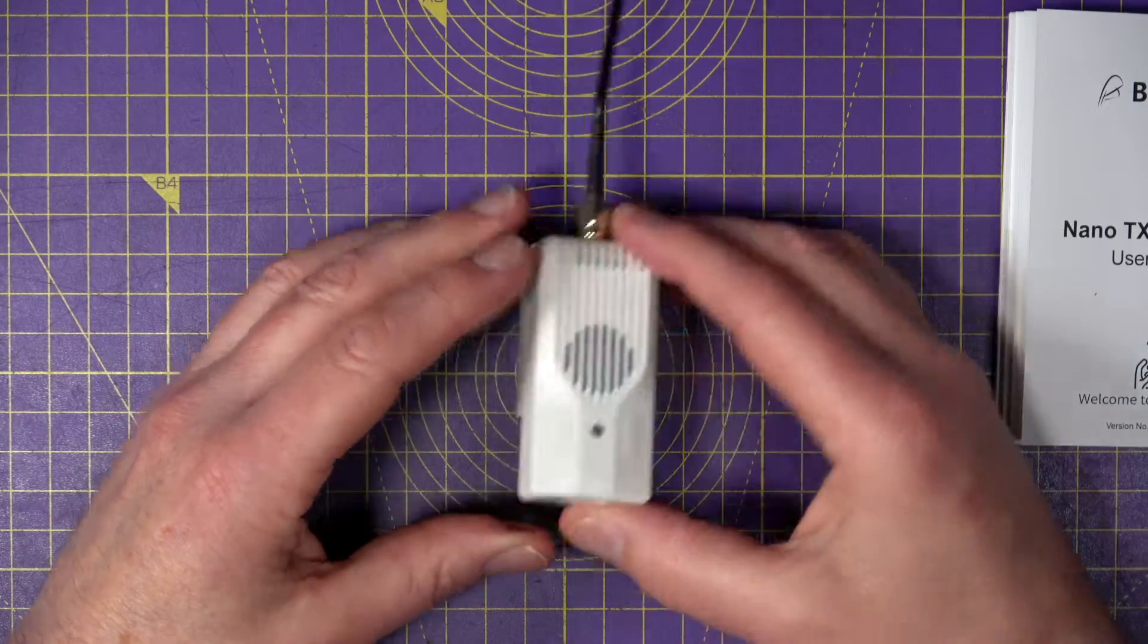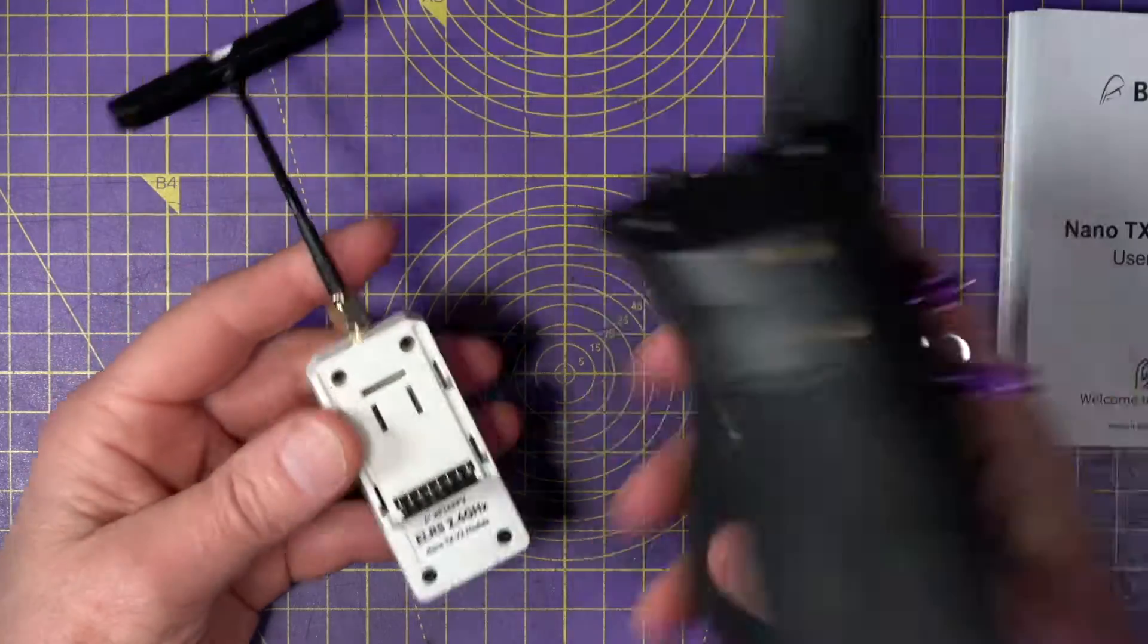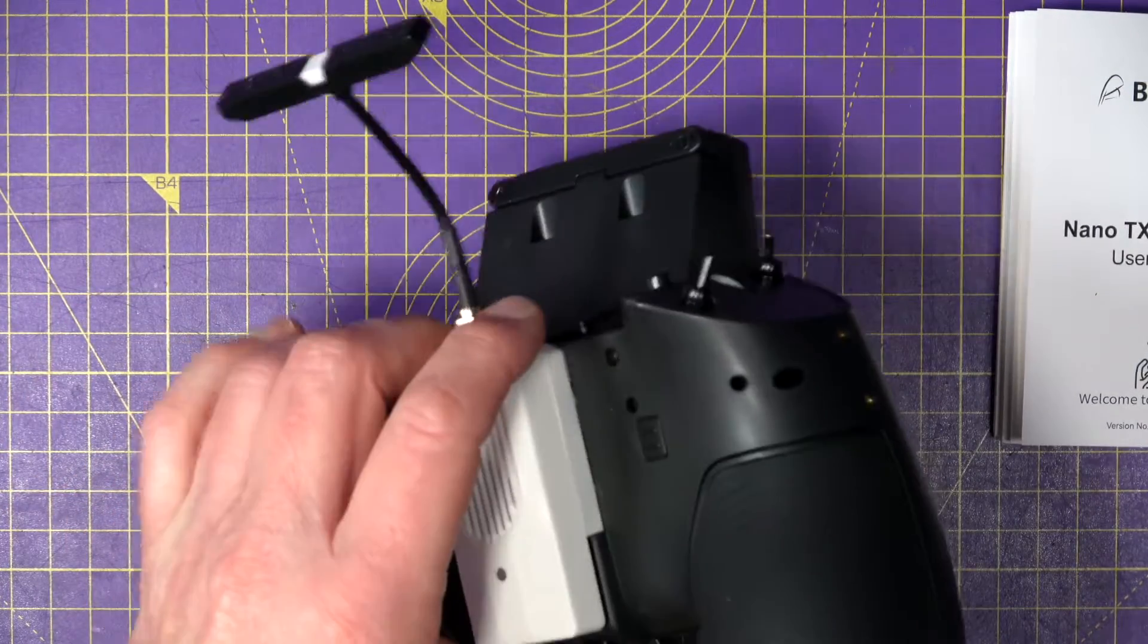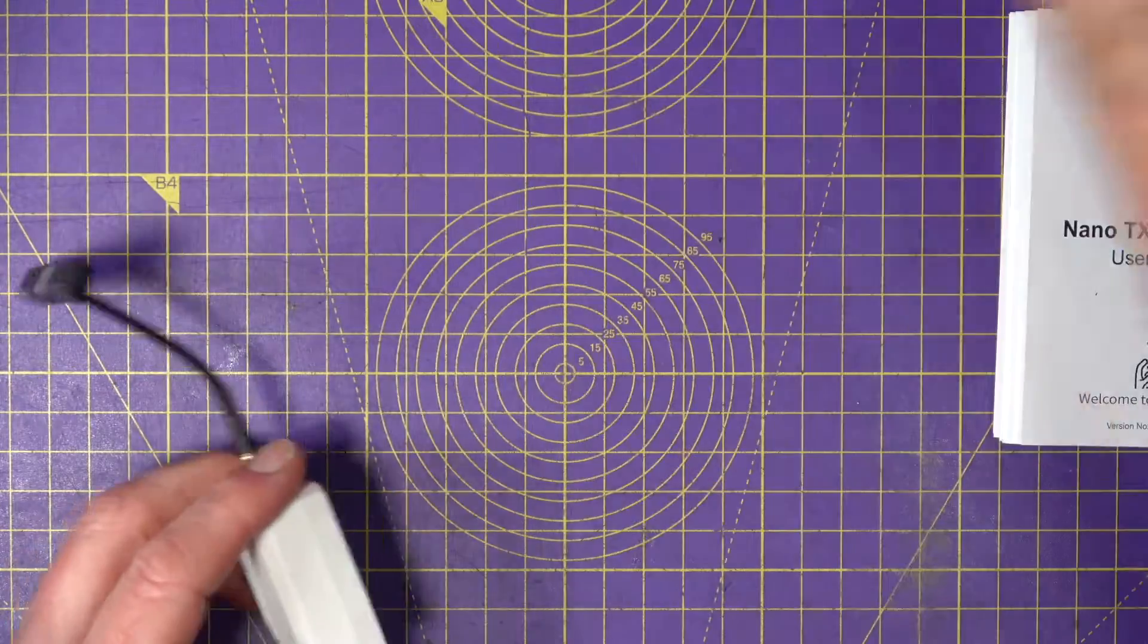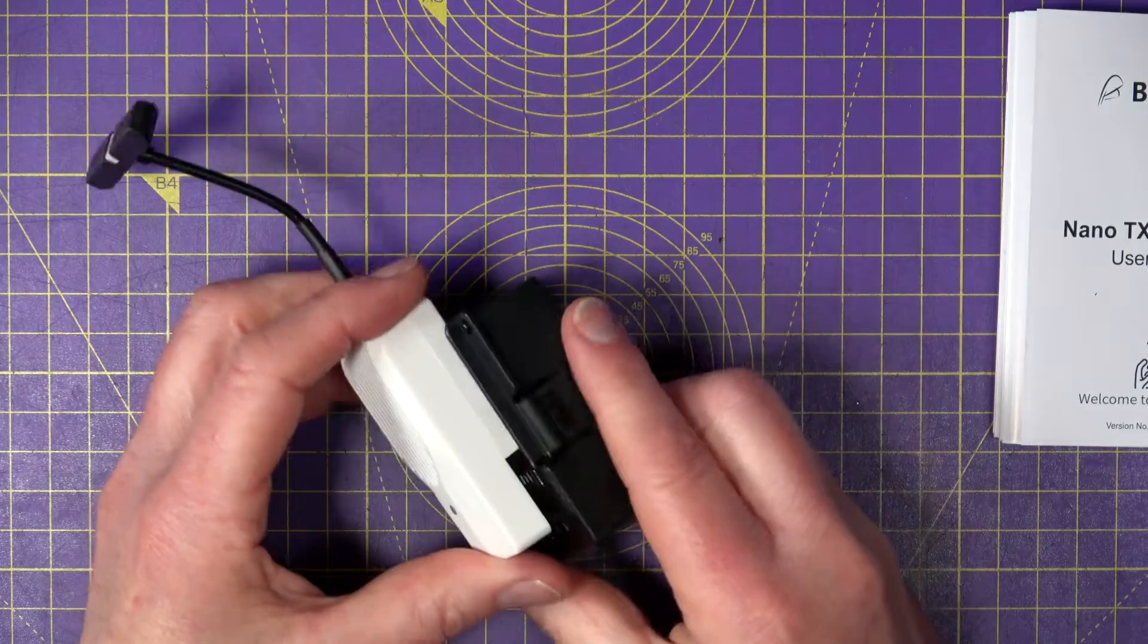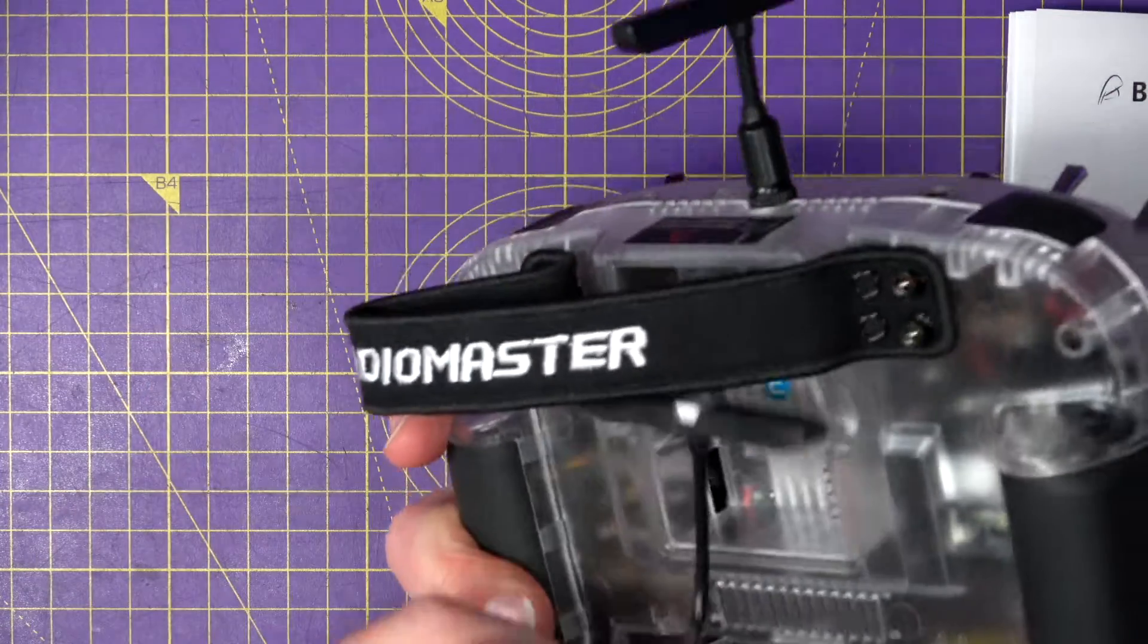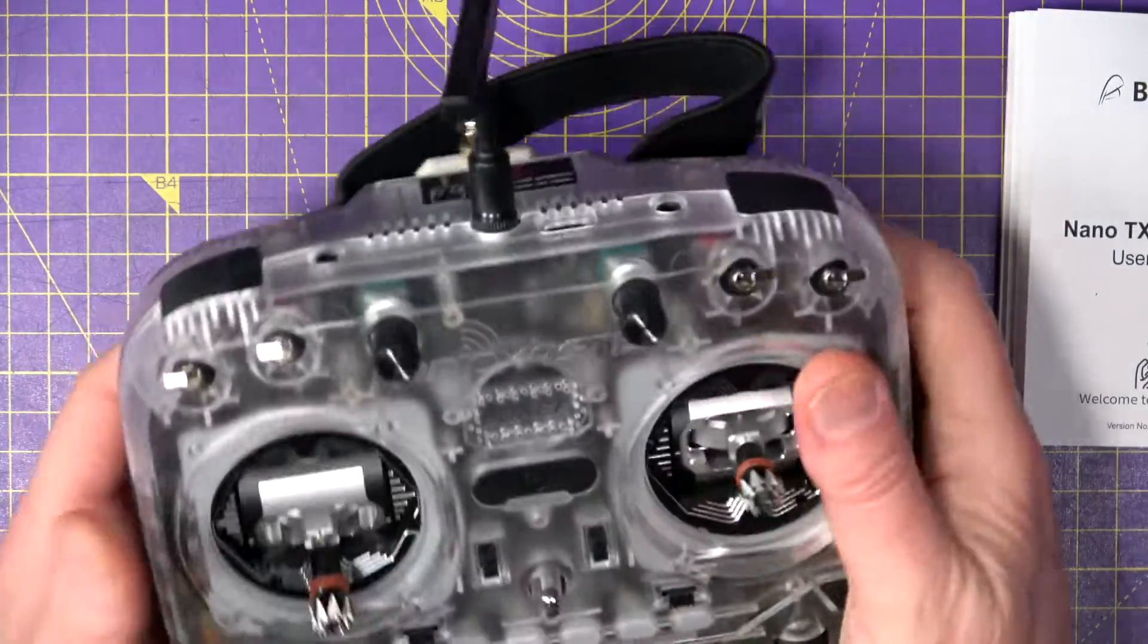Now this fits into any standard nano style connector on something like the Zorro, or maybe the RadioMaster Pocket, and then you can use an adapter like this to mount it into your larger radio, like this. Have that in there, turn that on.